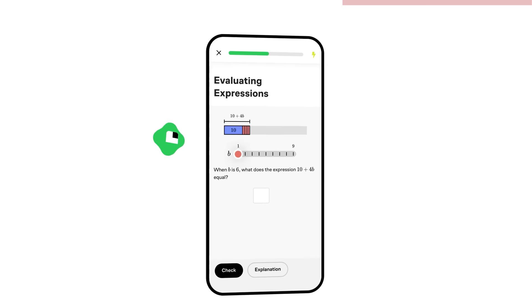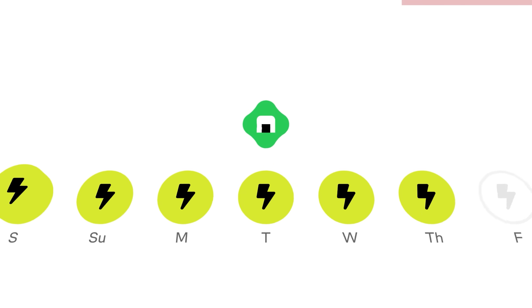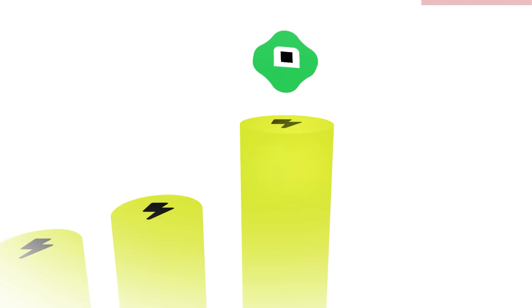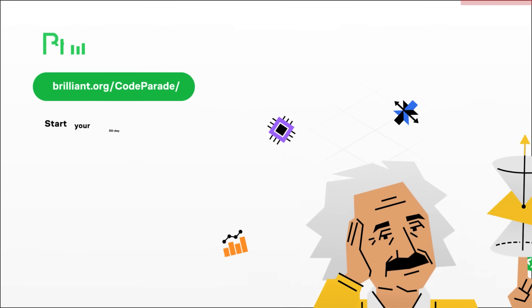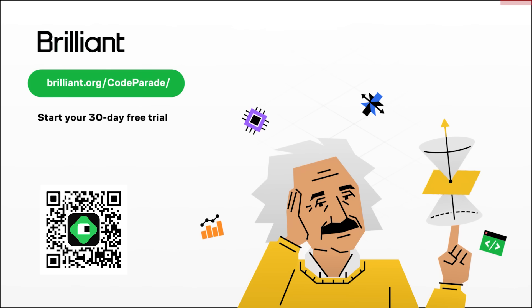It's easy to learn anywhere, on your phone, laptop, whenever you have time. And it's completely free to try for 30 days, so if you're on the fence, it's super easy to just give it a try. Just remember to use the URL brilliant.org slash code parade, so you'll get the 20% discount if you decide to sign up for the premium subscription. Thanks Brilliant.